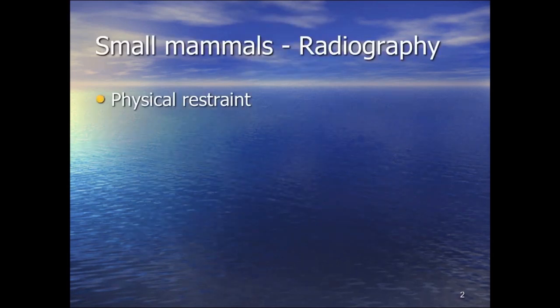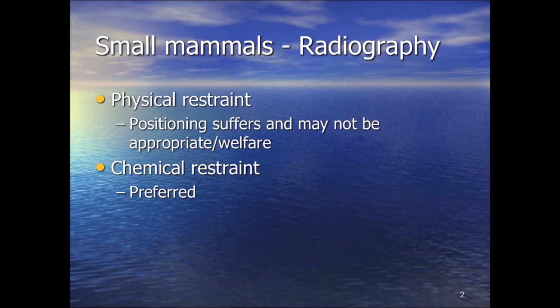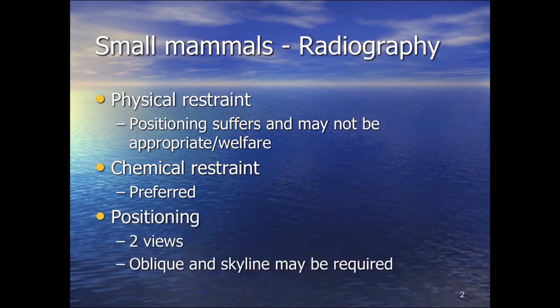We'll look at small mammal radiography first. Positioning is all important and interpretation of radiographs is incredibly difficult with potentially incorrect positioning, so chemical restraint really is preferred in the majority of cases. You may be able to get away with poor positioning for certain diagnostic purposes such as proving gravidity, or physical restraint in some reptiles, but otherwise we're looking at ideally wanting to immobilize them.